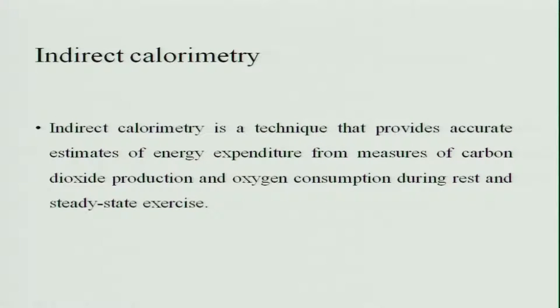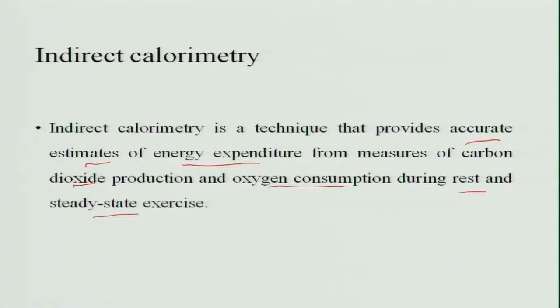Indirect calorimetry is a technique that provides accurate estimates of energy expenditure from the measures of carbon dioxide production and oxygen consumption. Both carbon dioxide production and oxygen consumption are taken into consideration during rest and steady state exercise. When the person is at rest, the expenditure of energy is measured by means of oxygen consumption and carbon dioxide production.